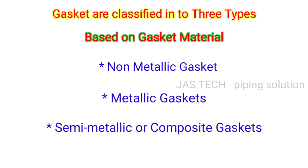Gaskets are classified into three types based on gasket material: No.1 - Non-metallic gasket. No.2 - Metallic gasket. No.3 - Semi-metallic or composite gasket.